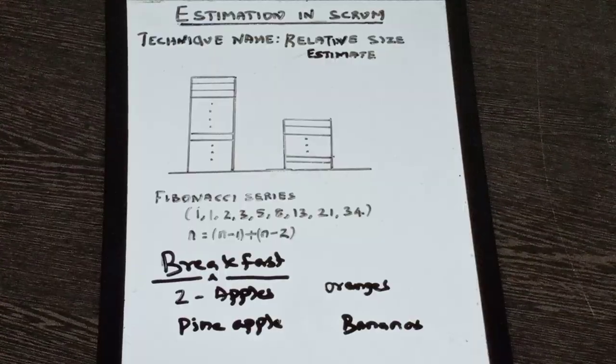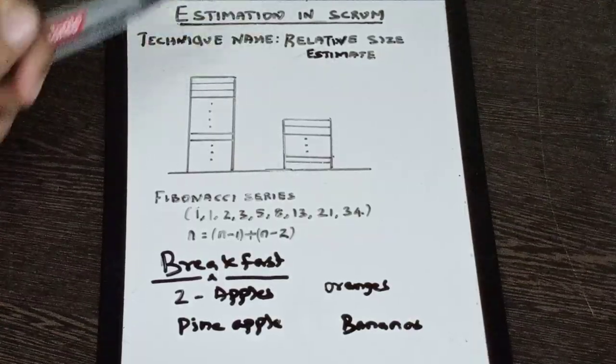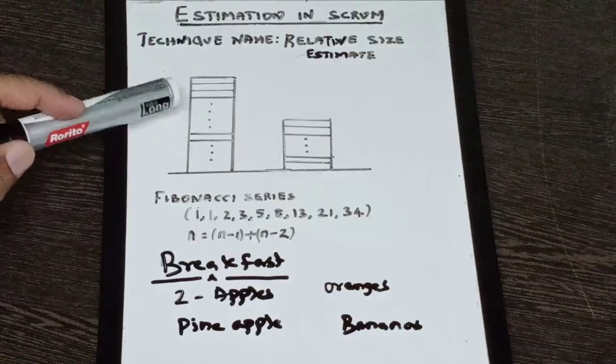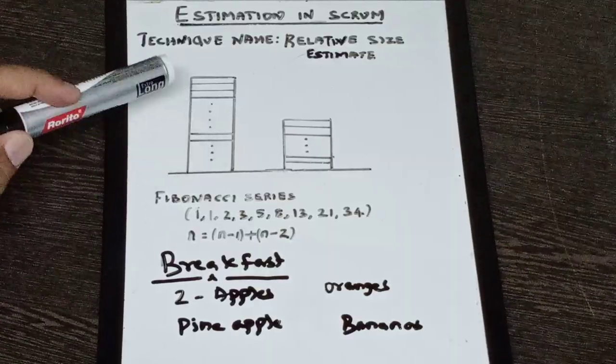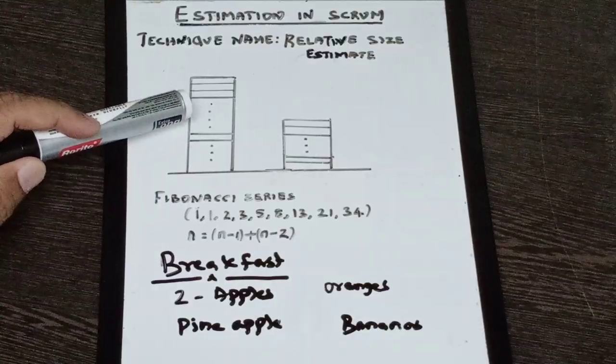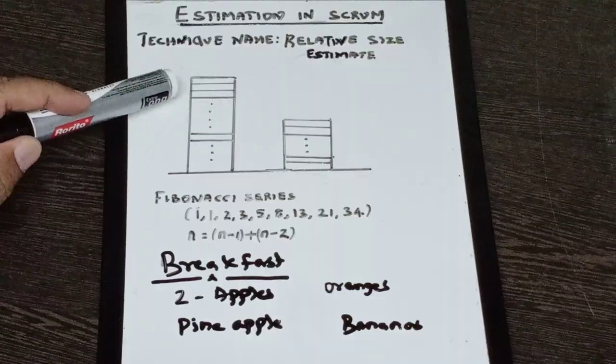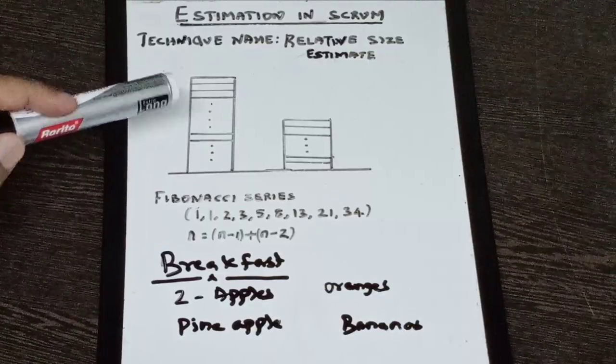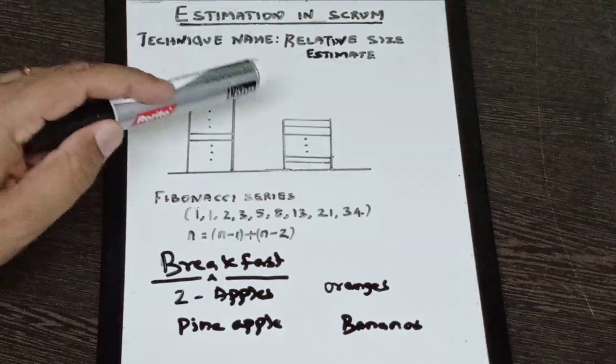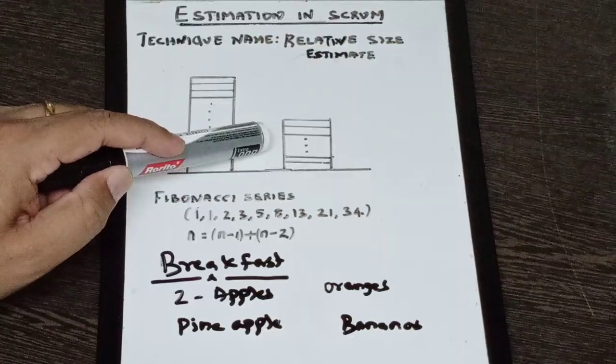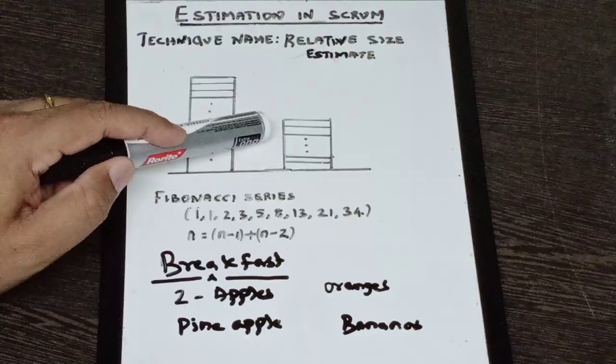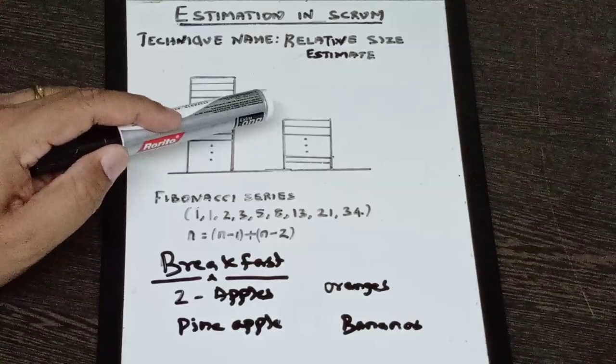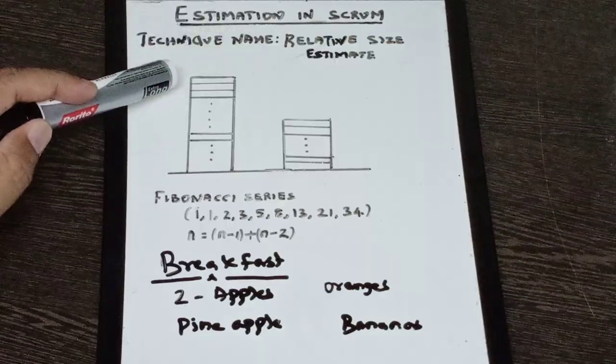But in Agile we use a technique, in Scrum especially, we use a technique called relative size estimate. And what is relative size estimate? Imagine this is a tall building with so many floors and we don't know the number of floors and height of each floor, but we know this is a tall building with so many floors. If I ask you to estimate what is the height of this building, it's going to be very difficult because a lot of information is missing. Now, if there is a reference—another building which is near to that, again a tall building with so many floors, but here also I don't know the number of floors and height of each floor. But if I know the height of this particular building, then using that as a reference, we can be able to estimate the height of this tall building.